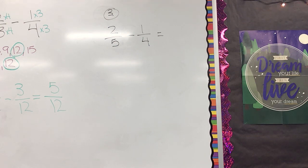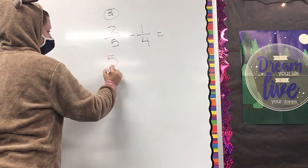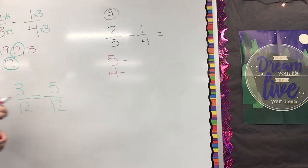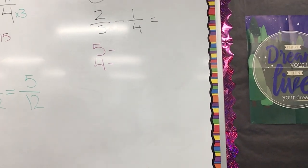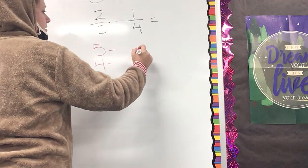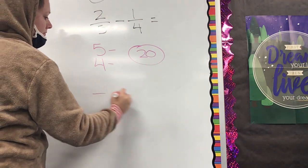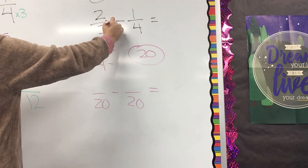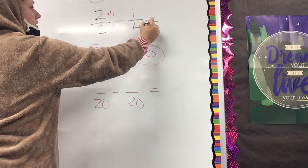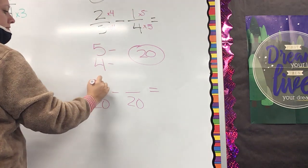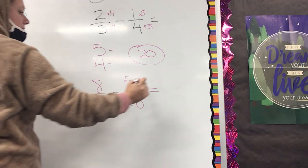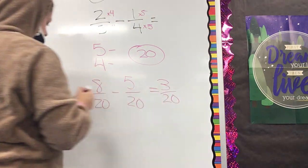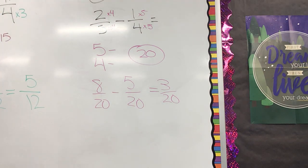Show your answer to a neighbor — see if you agree or disagree. When you had to find your new least common denominator, what was that common multiple you shared? Twenty. And five times what was twenty? Four. And four times what was twenty? Five. Eight minus five is three. Your denominator stays the same. Is there any simplifying to do? No. Very nice.